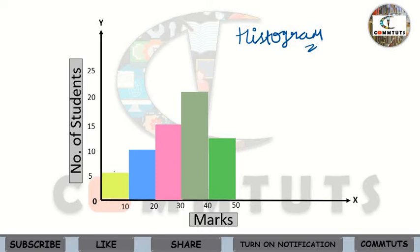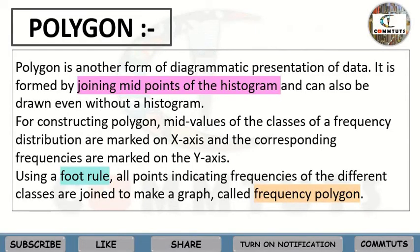Every histogram's midpoints, when you join them with the help of a scale like this, you will get a polygon. That's how a polygon is formed. Polygon is another form of diagrammatic presentation of data — it is the second form of frequency diagram. It is formed by joining the midpoints of the histogram.